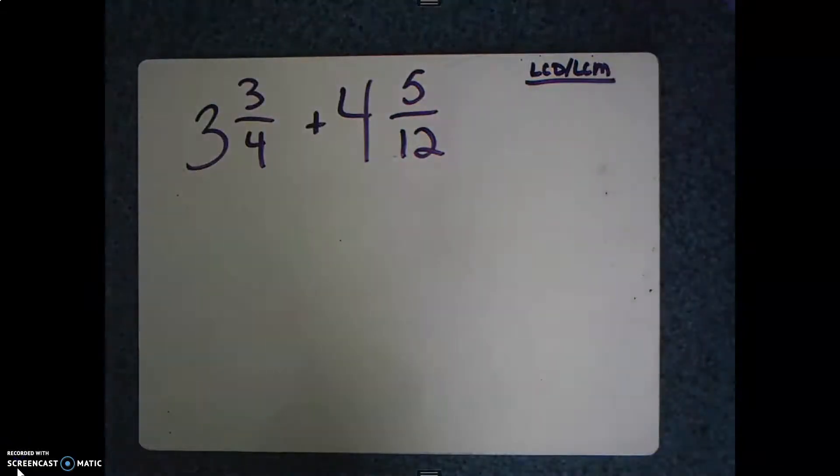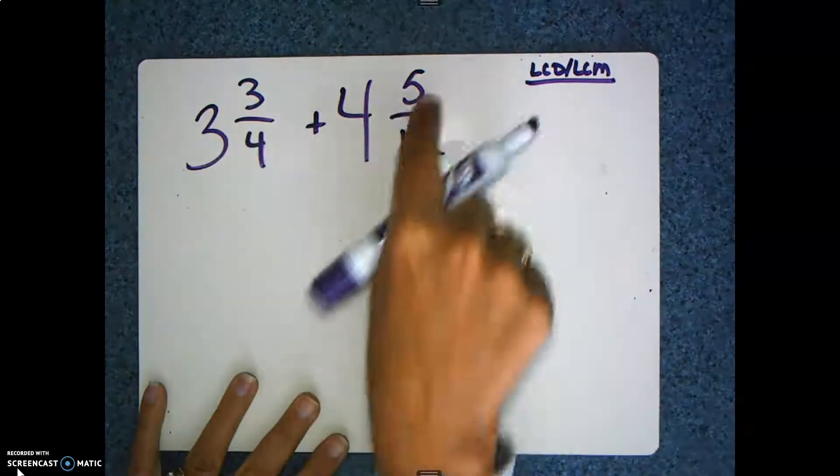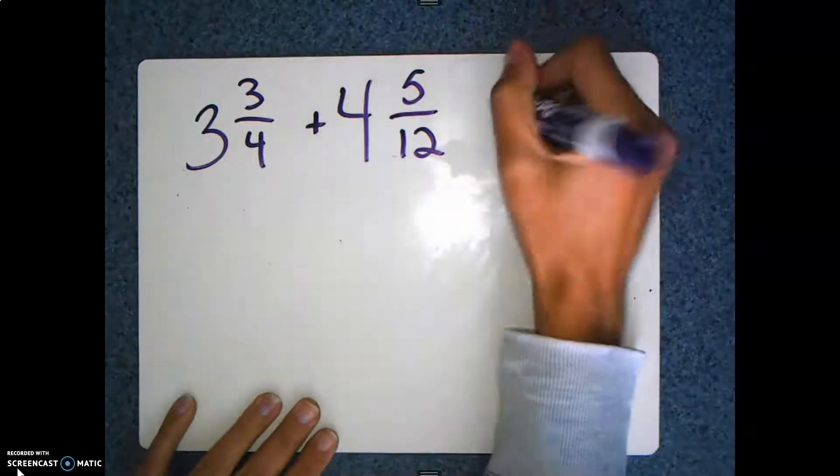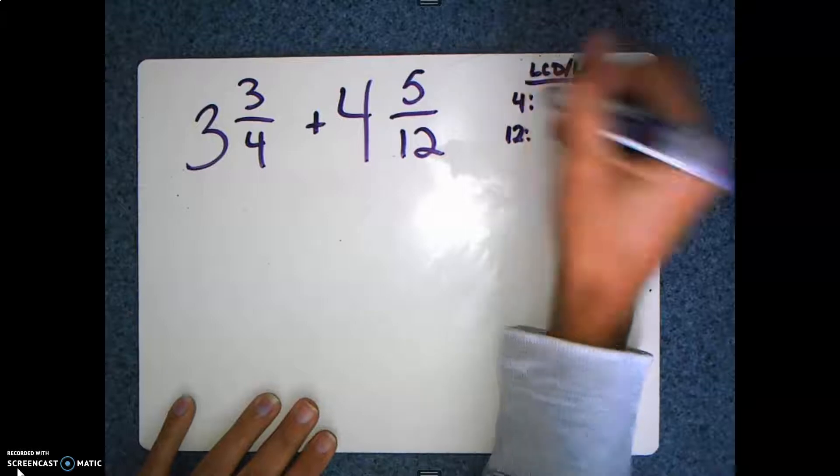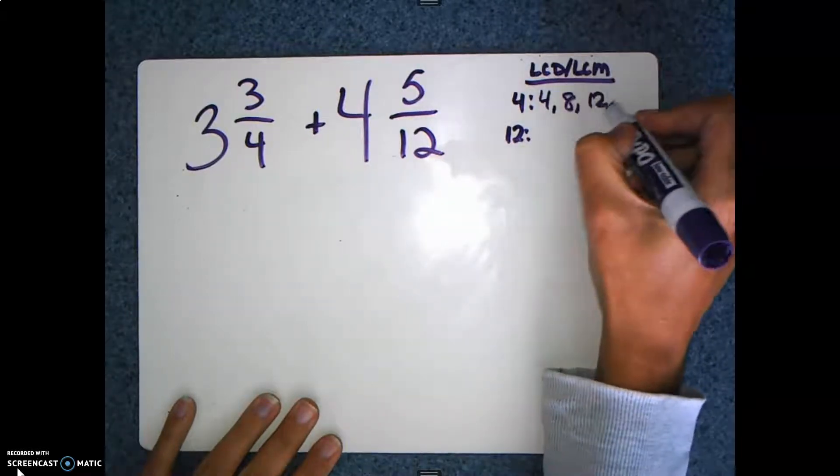Alright, so we have to find the lowest common multiple or lowest common denominator of ¾ and ⁵⁄₁₂. So looking at my denominators, I have a 4 and a 12. Remember to find this, do skip count. So 4, 8, 12, 16.